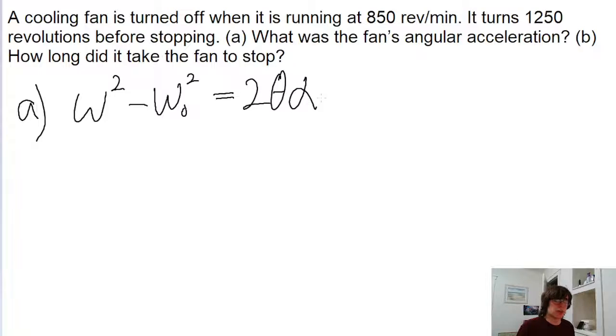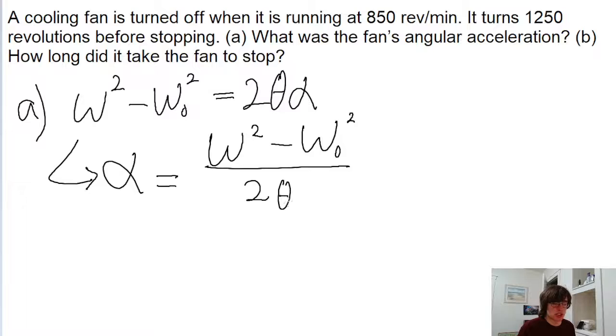Now we're looking for the angular acceleration in this problem, so we're going to solve for alpha. Algebraically solving for alpha by dividing both sides of the equation by 2 theta, we find this formula: that it's equal to omega squared minus omega naught squared, all divided by 2 theta.